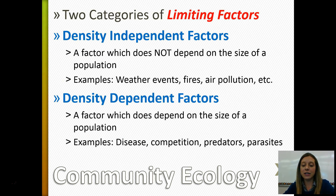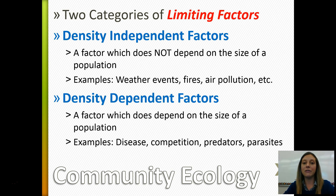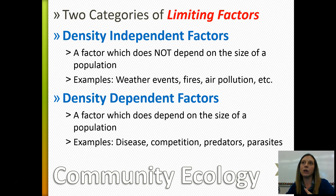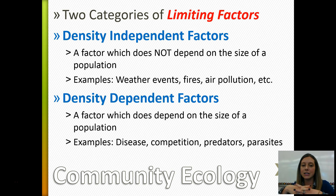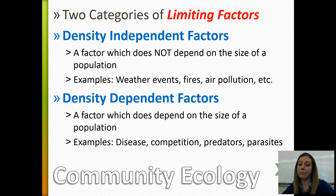There are two types of limiting factors. Density-independent factors are independent of the size of a population — things like weather events, fires, air pollution, and rainfall. It's not going to rain more if you have more animals. Density-dependent factors control the size of a population and are dependent on the size of a population — for example, disease will have a different impact depending on population size, and the amount of predators or competition also depends on population size.